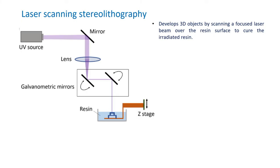We have already seen laser scanning stereolithography and its principle of operation. We have also seen various CAD/CAM aspects related to generation of 3D parts by slicing the 3D digital model into 2D drawings or 2D digital models. There are certain variants of the stereolithography process being used in industry, and some of them we will be seeing right now.